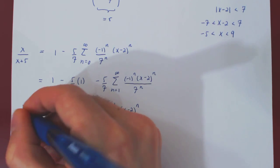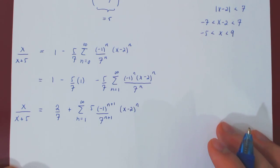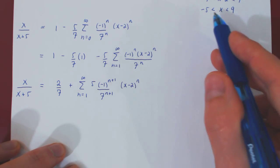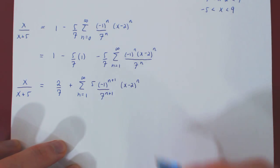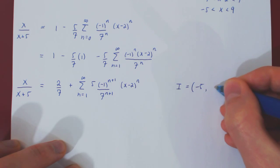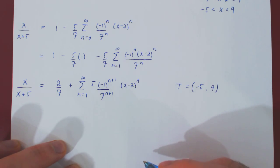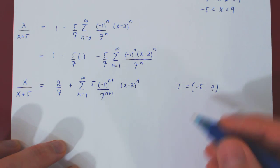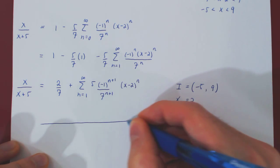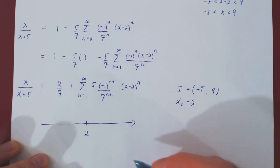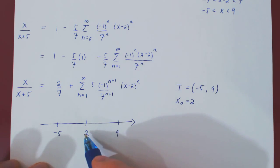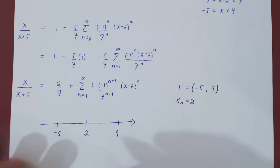This form is the exact same form that we obtained in the previous video by finding a pattern for higher derivatives of the function x over x plus 5 at 2. We have the exact same conclusion: the equality is only valid for values of x that lie strictly between negative 5 and 9, so the interval of convergence of the Taylor series is from negative 5 to 9, excluded. The center of the series was 2. Visualizing the interval of convergence: the center is 2, the left endpoint is negative 5, the right endpoint is positive 9, and the distance from 2 to 9 is 7 and from 2 to negative 5 is 7. So the radius of convergence of the Taylor series is 7.